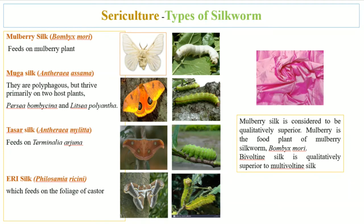The types of silk and silkworm include: first, mulberry silk, produced by Bombyx mori, which feeds on the mulberry plant. Next is muga silk, obtained from Antheraea assamensis, a polyphagous insect that prefers two host plants, Persea bombycina and Litsea polyantha. Next is tassar silk, obtained from Antheraea mylitta, which feeds on Terminalia arjuna, commonly known as arjuna.